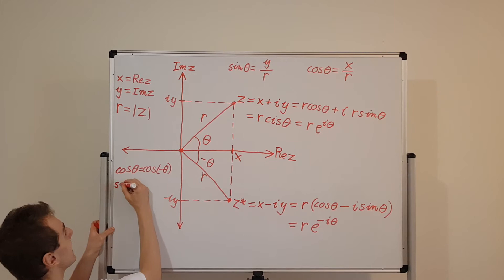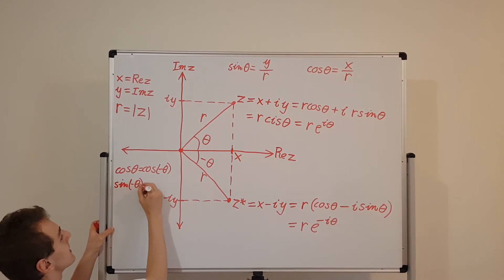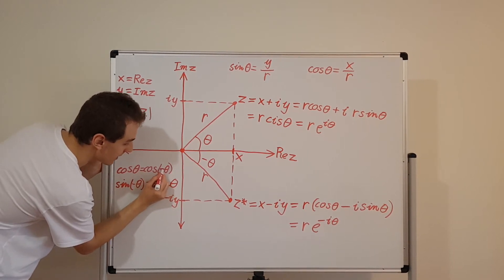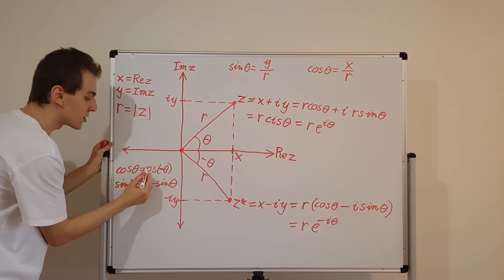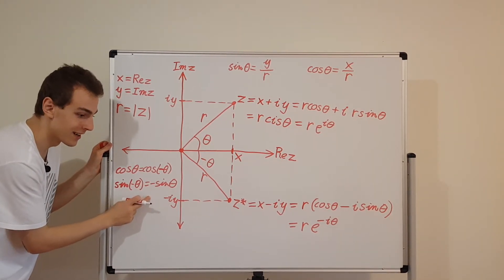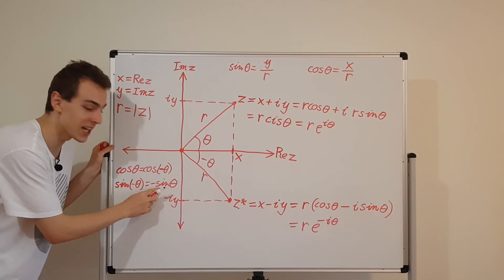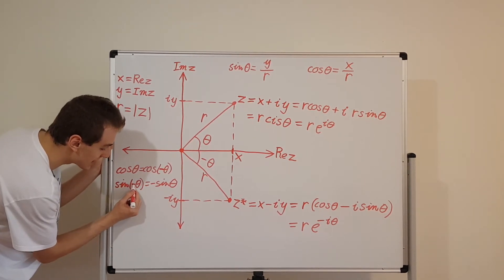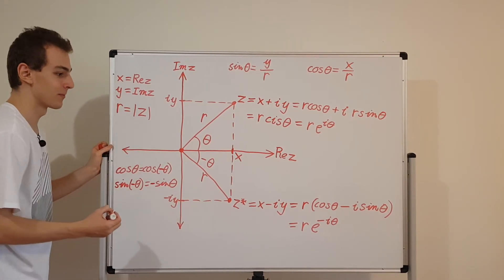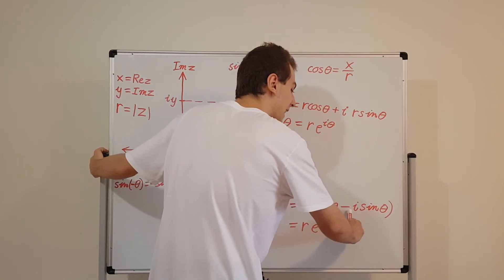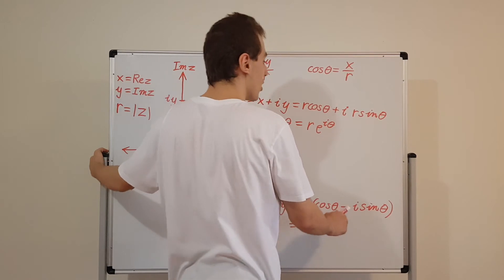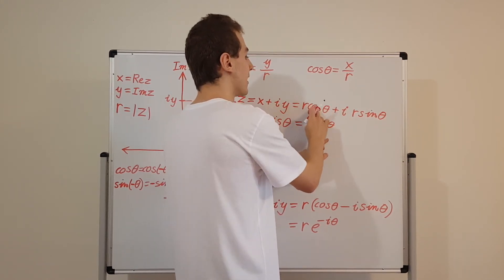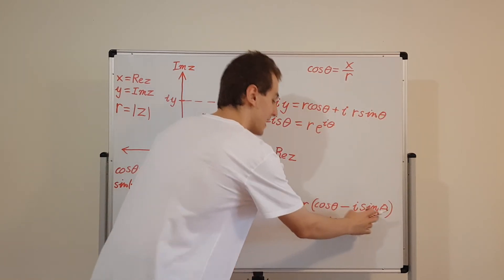But for sine, if you have sine of minus theta, that is equal to minus sine theta. So putting minus theta inside the cosine doesn't change the cosine, but it does change the sine — it flips its sign. That's why we can have a minus sign in the exponent for z star. We're taking the polar form and substituting a negative angle: the negative angle doesn't change cosine, but it changes sine to minus sine. And that's what complex conjugation does.